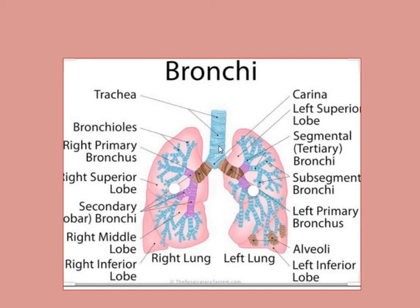The trachea, primary, secondary, and tertiary bronchi all contain cartilage, but our bronchioles do not contain cartilage. Cartilage is the basic structural support for the large airways. The bronchioles instead have smooth muscle.